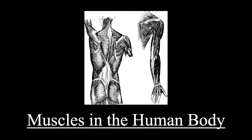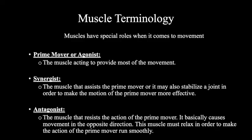Now we will be discussing 15 muscles in the human body that are most relevant to this unit. Before discussing the specific muscle names and their roles, it is important to note that all muscles have a special role when it comes to movement. Any movement involves a muscle. Muscles in motion are either classified as prime mover, synergist, or antagonist.